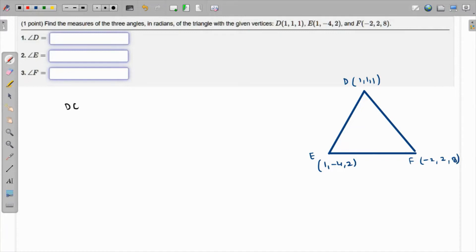First, I'm going to find vector DE. Vector DE is the coordinates of E minus the coordinates of D. So that's 1 minus 1, -4 minus 1, and 2 minus 1, which is <0, -5, 1>.